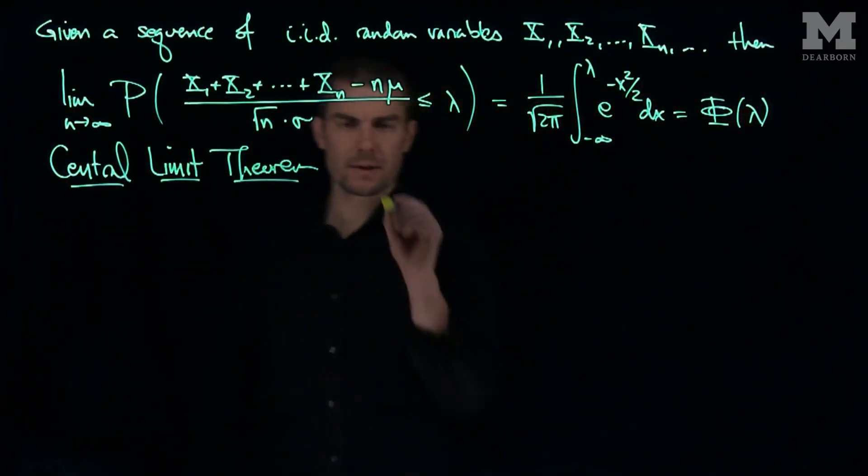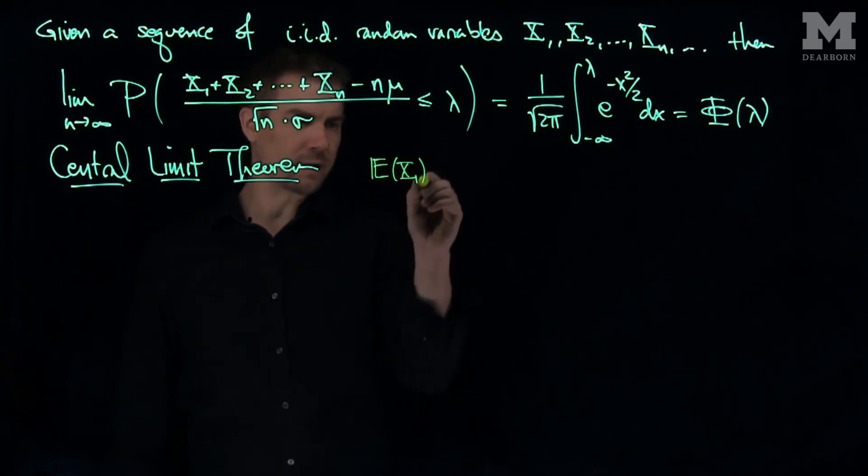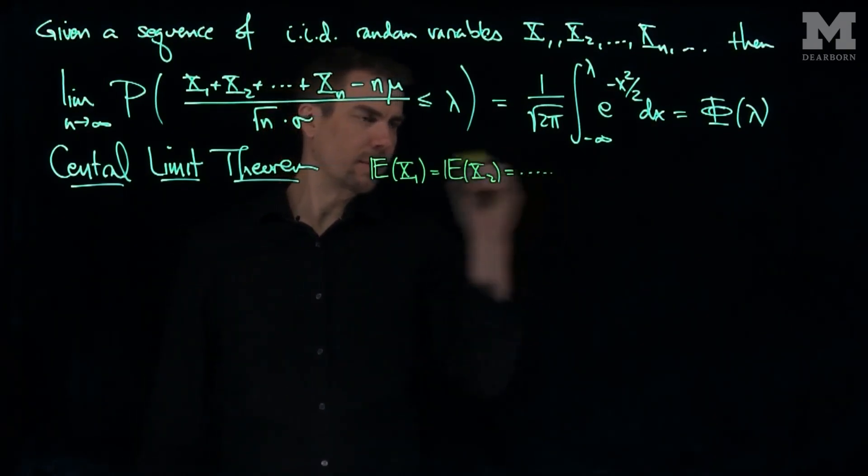Well, first we should note that the expected value of x1 is equal to the expected value of x2, etc., and these are all equal to the value mu.